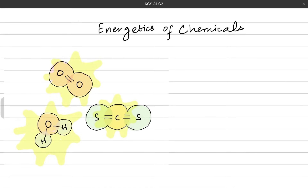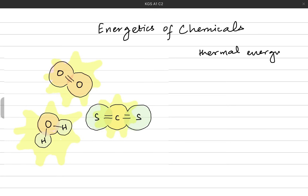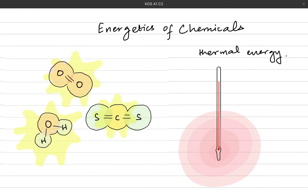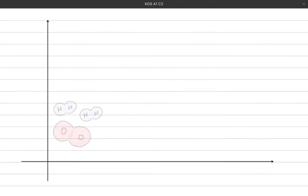Another sort of energy that we come across often is thermal energy. Thermal energy is a reference to the temperature of the surroundings — it has nothing to do with the bonds. If the temperature is hotter, the thermometer shows higher readings; in colder conditions, it becomes cooler.